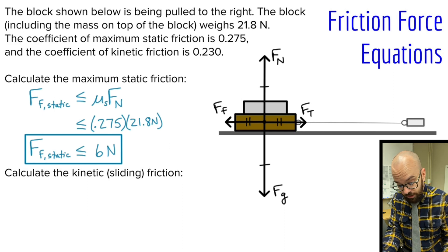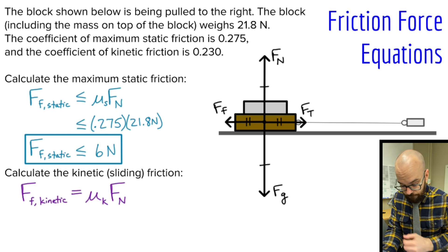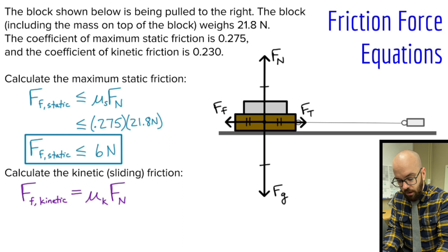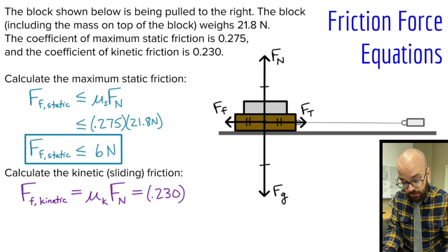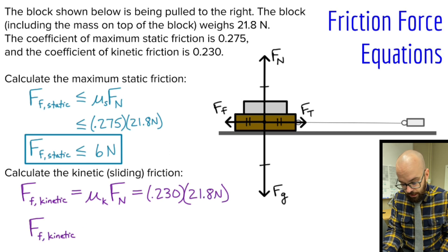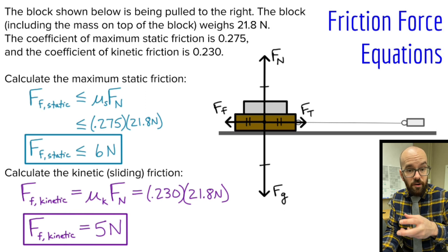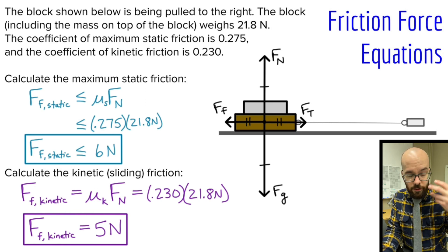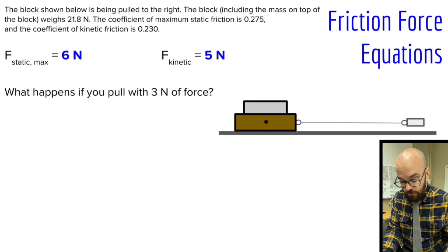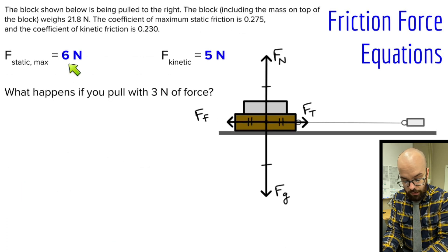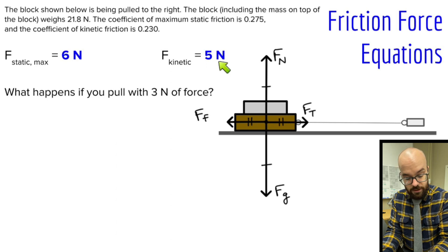Now let's calculate our kinetic or sliding friction. We'll write our kinetic friction equation and this time use mu sub k. Our coefficient of kinetic friction is 0.230 times our normal force, which is still 21.8. And I get a kinetic friction force of 5 newtons. So our max static friction is 6 newtons and our kinetic friction is 5 newtons.